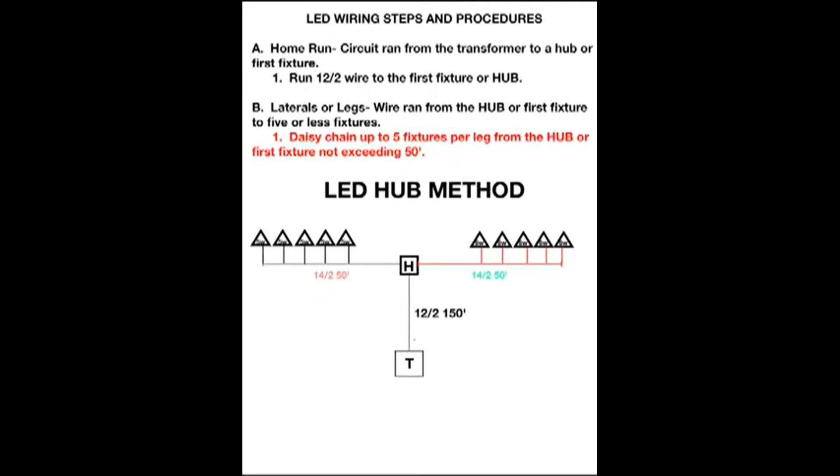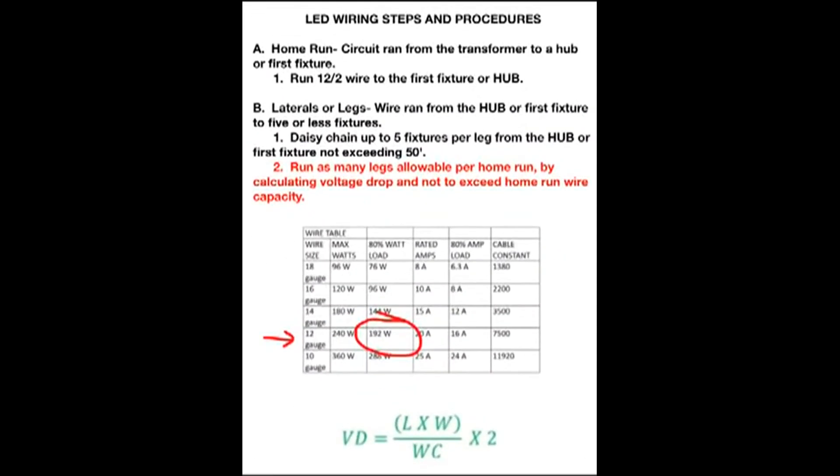You can run as many legs allowable per home run, but make sure you calculate the voltage drop. There's a formula there, and don't exceed the home run wire capacity.